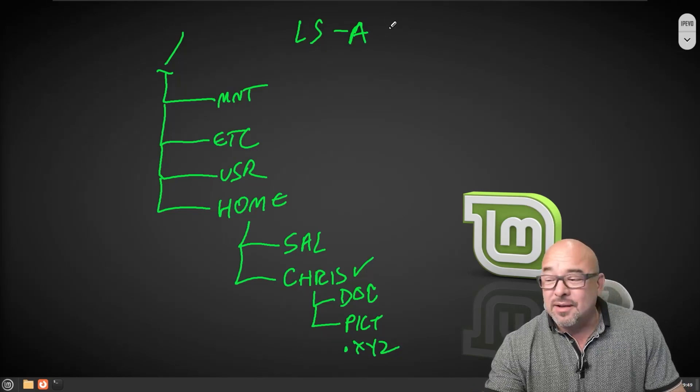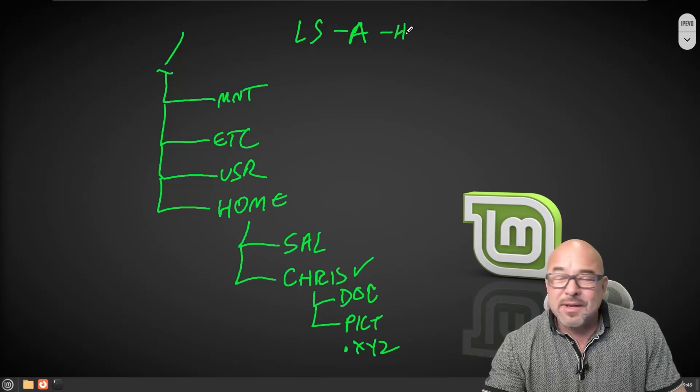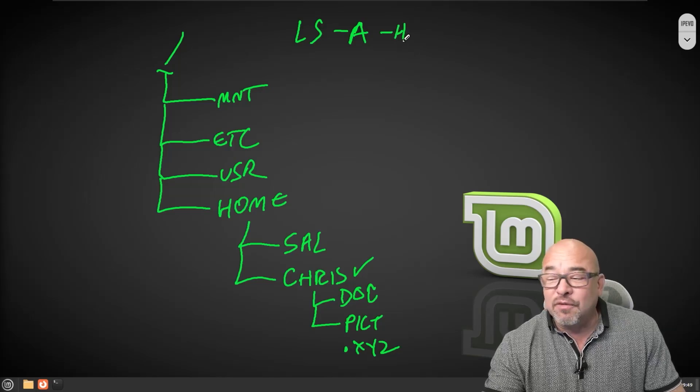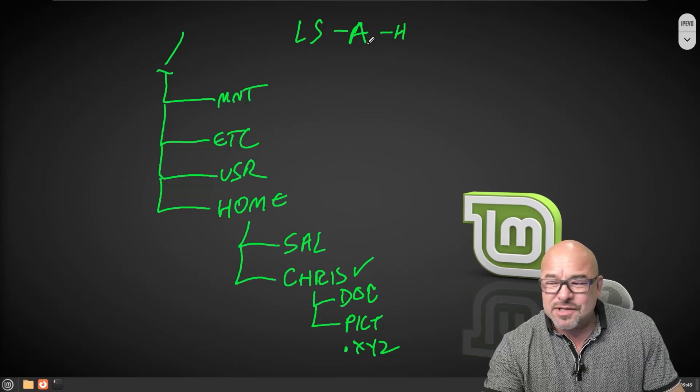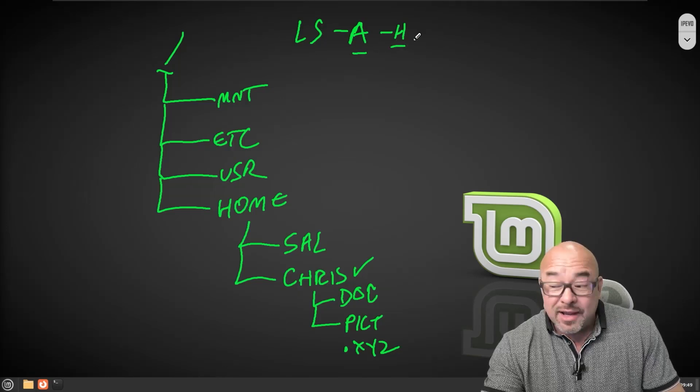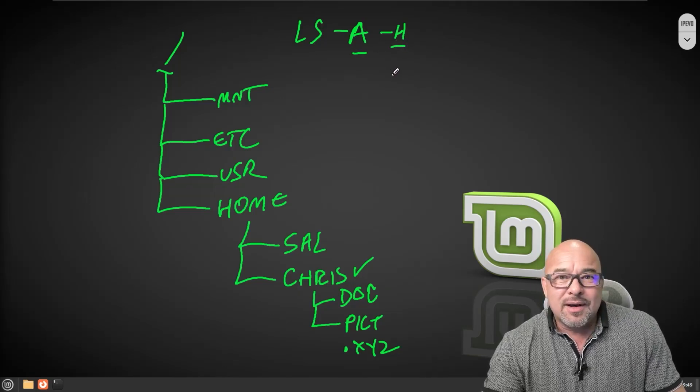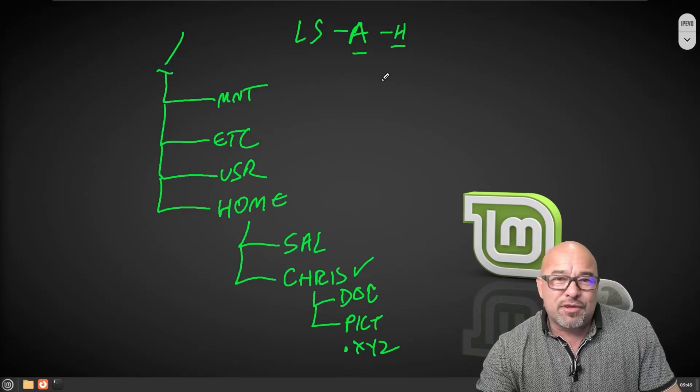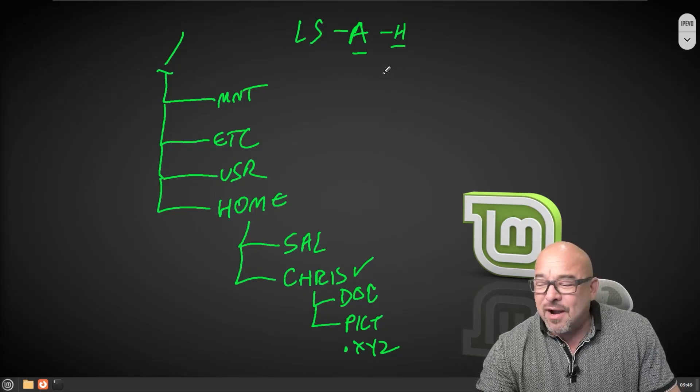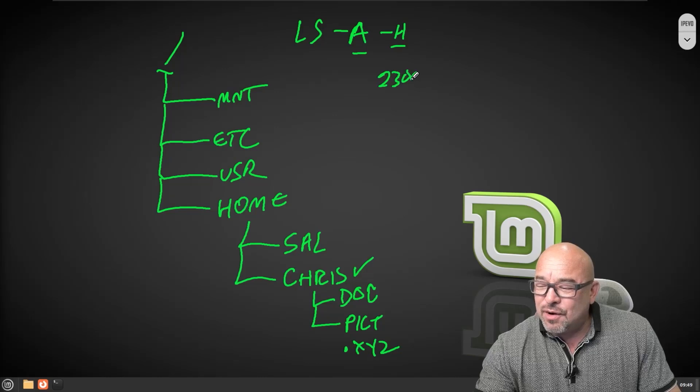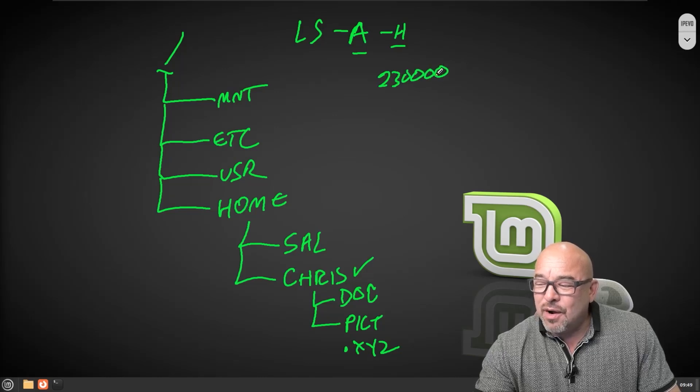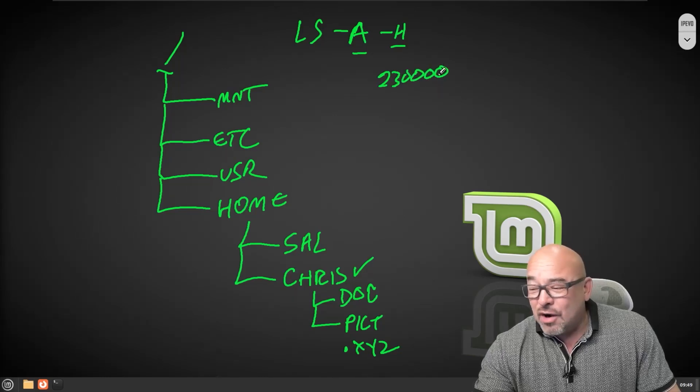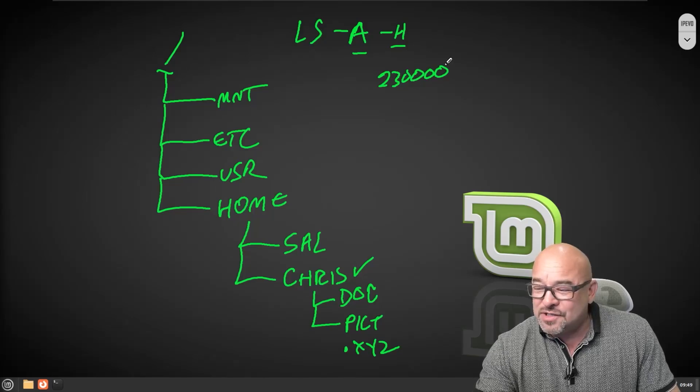We also saw in a previous nugget that you can use a dash H and that will show you kind of human readable form. It's easy to think that that means hidden, but that's not what that means. This means all files, including hidden. And this means a human readable form. So normally you might see something that's a 230 kilobyte file as 23000.